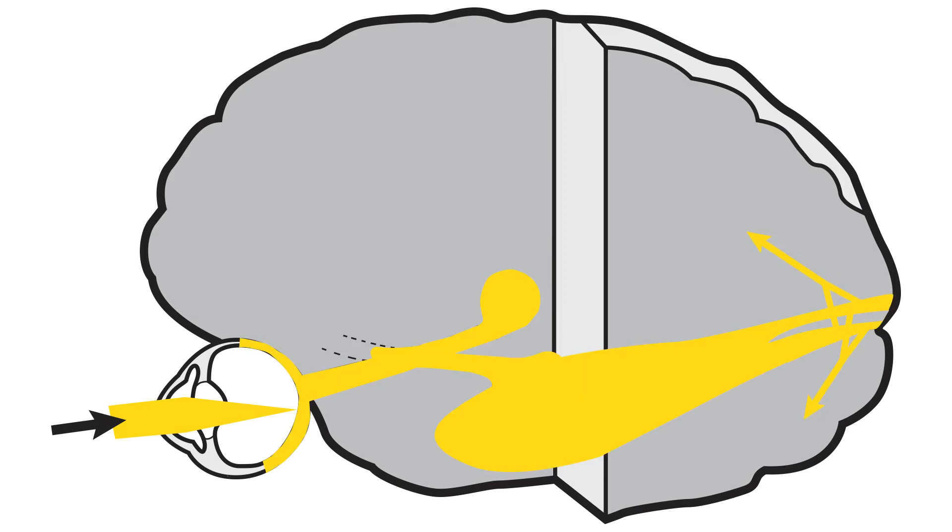The retinocortical segment converts light into neural signals that travel from the retina to reach the primary visual cortex in the occipital lobe.